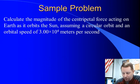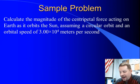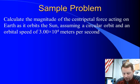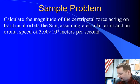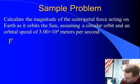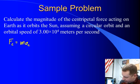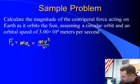Let's take a look at another sample problem. Let's calculate the magnitude of the centripetal force acting on the earth as it orbits the sun, assuming a circular orbit, which isn't too far off, and an orbital speed of about 3 times 10 to the 4 meters per second. And of course the centripetal force in this case is going to be caused by gravity. So we know that the centripetal force is going to be mass times the centripetal acceleration, or mass times the square of velocity divided by the radius.